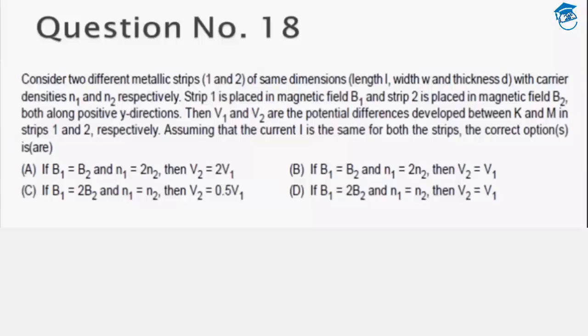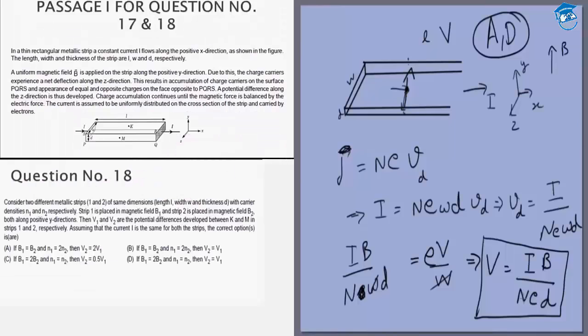Question number 18 can also be solved from this. In this case, B and N are changing. If B1 equals B2 and N1 is twice N2, then V1 will be half of V2. If B1 is twice B2 and N1 equals N2, then V1 will be twice V2. So the answer to question 18 will be A and C. Both of them come from this particular equation. Thank you.